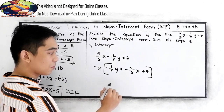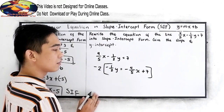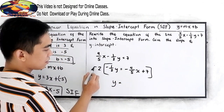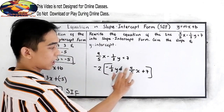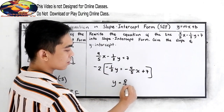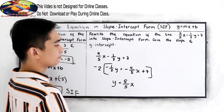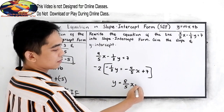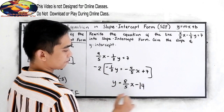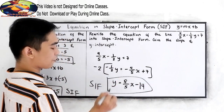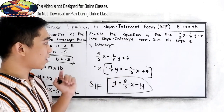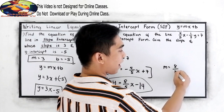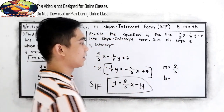Negative times negative will become positive. 2 times 1 half is 1, so the remaining on the left is just y. On the right side, negative times negative gives us positive: 2 times 4 is 8 over 5. Then negative 2 times positive 7 — negative times positive is negative — gives us negative 14. So this will be our slope-intercept form. Our slope is 8 over 5, and our y-intercept is negative 14.